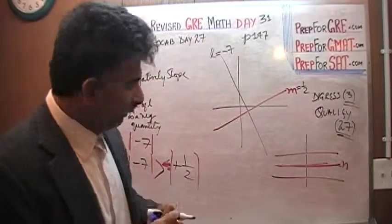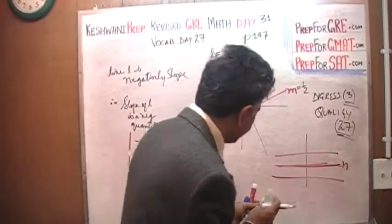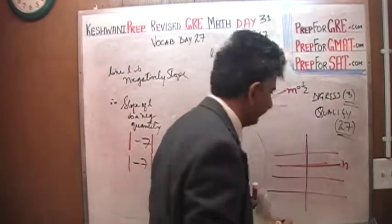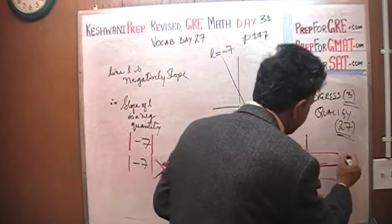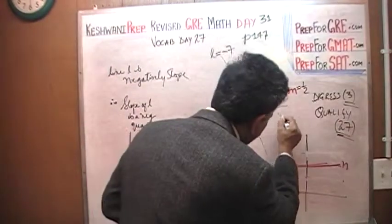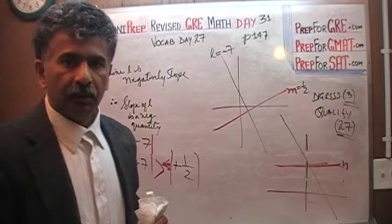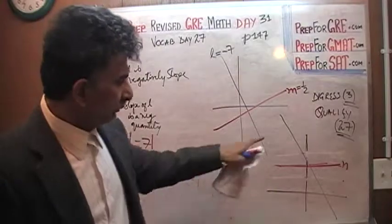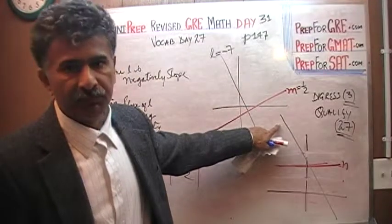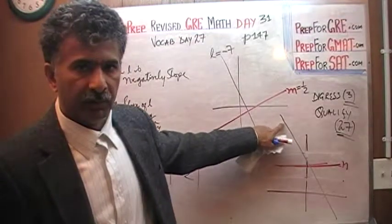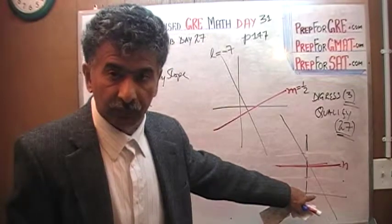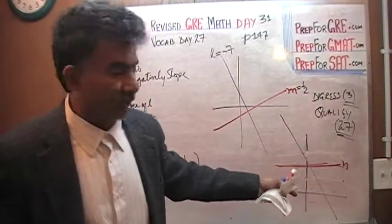This line has a slope of zero. The other line I just drew is very steep but negatively sloped, so its slope is a negative quantity — less than zero. Unless we take the absolute value of it, in which case it becomes positive and greater than zero. So the negative slope line, when you take the absolute value, that quantity is more than zero.